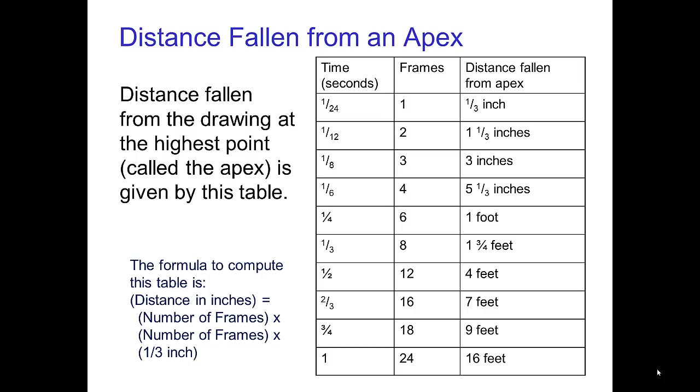Here's a larger table listing the distance fallen from the apex after a given number of frames. To calculate this table, or to find the distance for entries that are not in this table, you can use the following formula. Now, distance fallen in inches equals number of frames times number of frames times one-third of an inch.